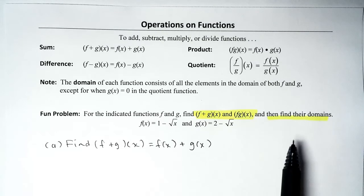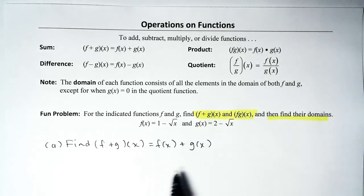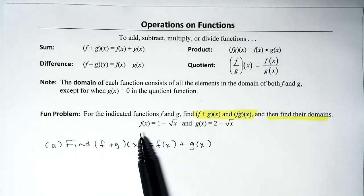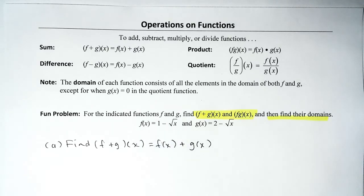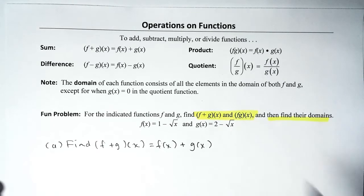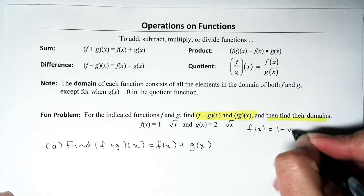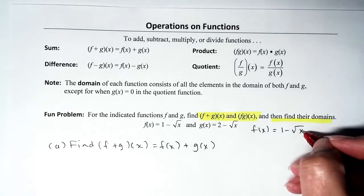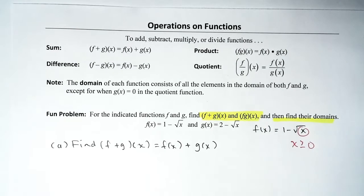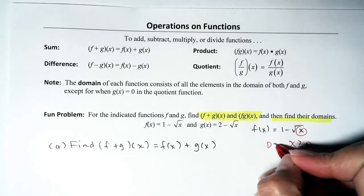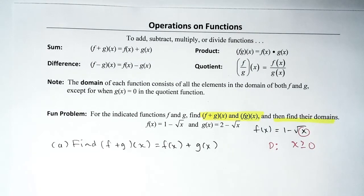Once we finish adding, we have to identify the domain. Regardless of what the sum simplifies to, we have to respect the domain of the original functions. For f of x equals 1 minus square root of x, there is a radical with even root, so we need to make sure the radicand is not negative. That means x has to be greater than or equal to 0. There's nothing to solve for, so the domain is x ≥ 0.